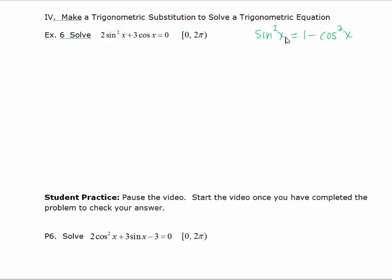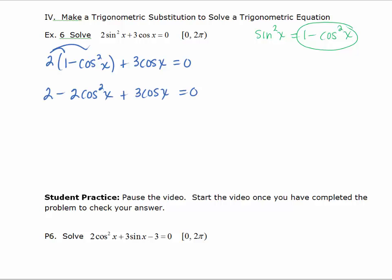Since sine squared x equals 1 minus cosine squared x, we can replace it with the substitution 1 minus cosine squared x. Once we substitute, we'll need to distribute. After distributing, we'd like to get this in quadratic form, so we can rearrange and also multiply both sides by negative 1 so that the leading term will be positive.